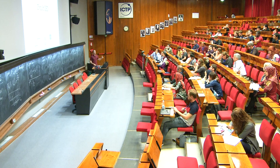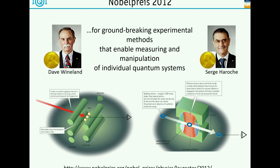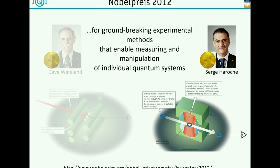So now we have resonators and we have qubits. How can we combine these two things and what do we gain from it? This brings me to circuit QED and back to the original ideas awarded the Nobel Prize in 2012 - specifically Serge Haroche's part, where they got the Nobel Prize for experimental methods that enable measuring and manipulation of individual quantum systems. This is really cavity QED, where you have a microwave very high-Q resonator and send atoms through that interact with the microwave field inside.